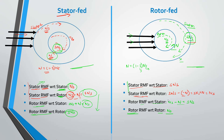So now you can see that with respect to rotor both RMFs have the same speed, and with respect to stator both RMFs have the same speed — similar to the stator fed case. This is the difference between stator fed and rotor fed induction motor.